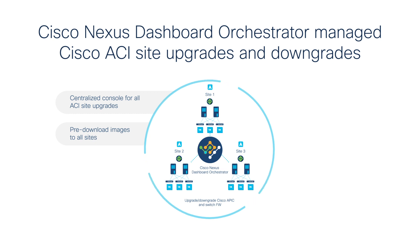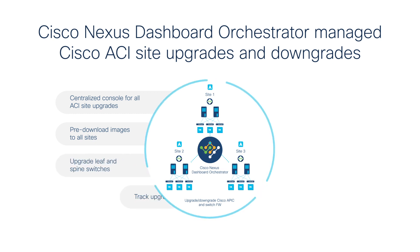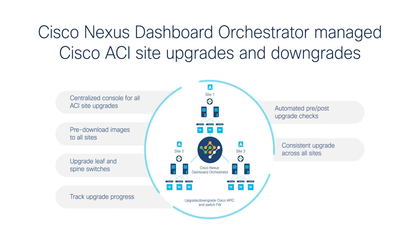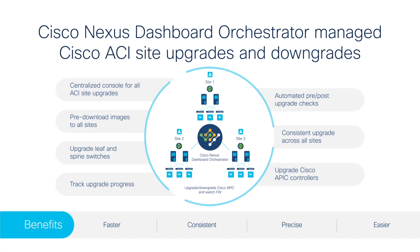Pre-download images to all sites, upgrade spine and leaf switches, track upgrade progress and automate pre- and post-upgrade checks. Avoid costly, slow, multiple maintenance windows for multiple fabrics. The entire process is simpler, faster, more consistent and more precise.